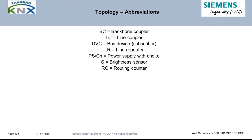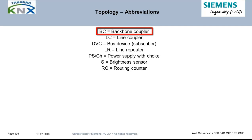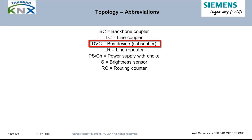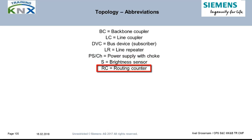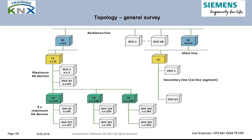Some terms and their abbreviations used in this chapter: BC equals backbone coupler, also referred to as area coupler. LC equals line coupler. DVC equals device, equal to subscriber. LR stands for line repeater. PS/CH equals power supply with integrated or attached choke. S equals brightness sensor. RC equals routing counter.